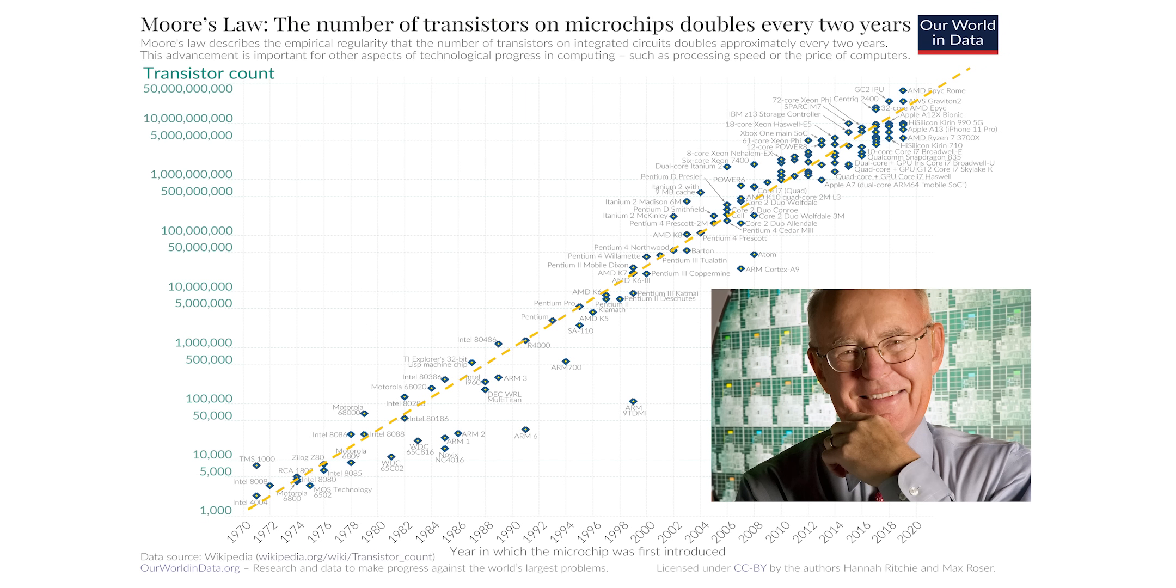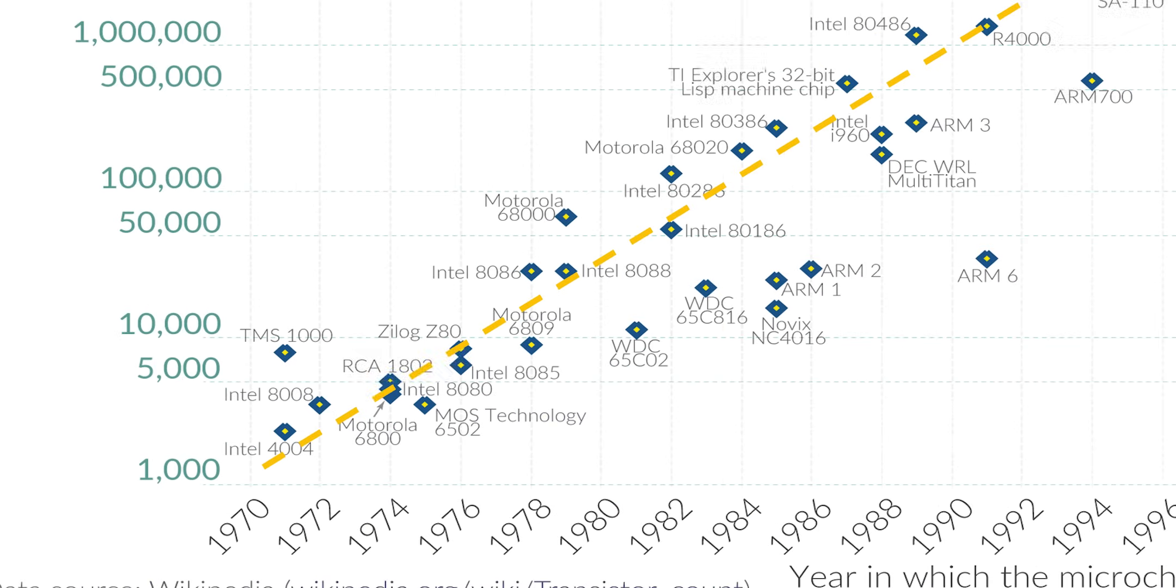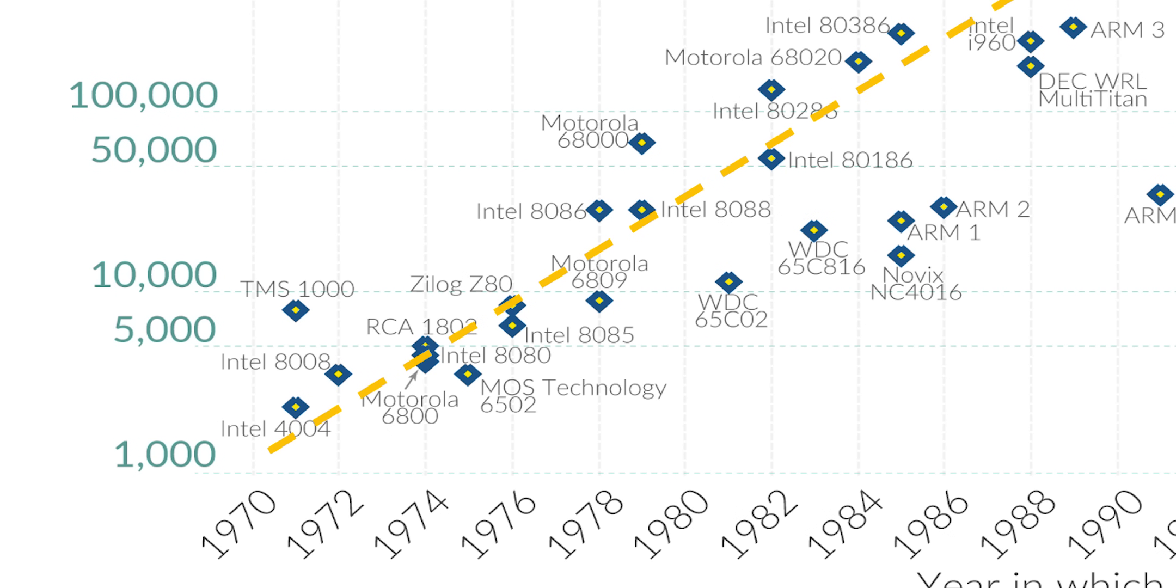That prediction became known as Moore's Law, and he made it back in 1965, five years before the first microprocessor even came out.